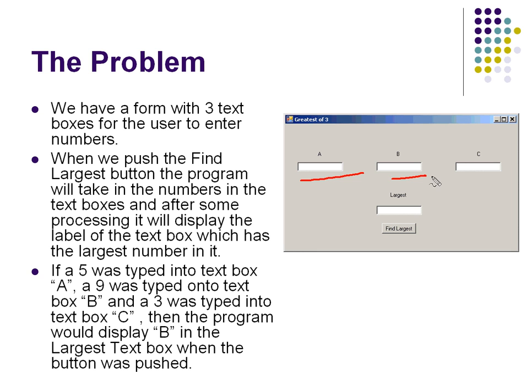The user will type numbers into these, and depending on which number, when you press this button down here, find largest, it's going to simply display either an A, a B, or a C in this box right here, depending on which one of these boxes holds the largest number. So here's a situation where the computer must make a decision.